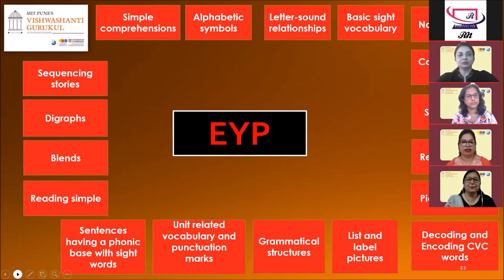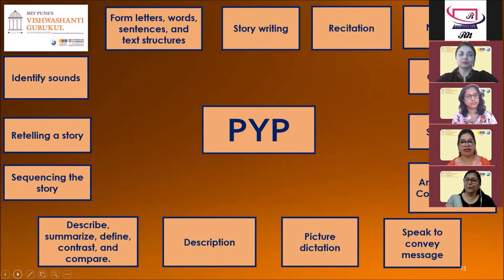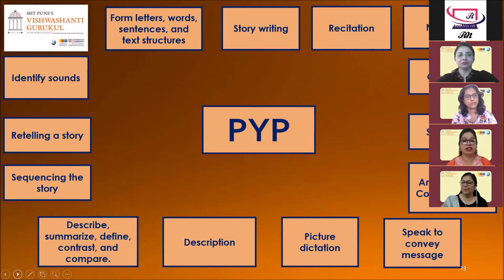Going further, in PYP 1 to 3, young children learn how to express themselves through written language, to identify sounds, to form letters, words, sentences, and text structures, and to learn how to put together a written story. They further develop their language abilities through recitation, narration, object talk, retelling a story, and a lot more as seen in the slide.